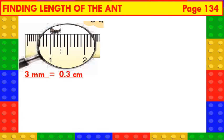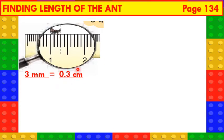Now, children, we will find the length of a small ant and then the length of a big ant. See here: 1, 2, 3. So, the length of this small ant is 3 millimetres. This 3 millimetres is also written as 0.3 centimetres. Or, we can also say that the length of this small ant is 3 tenths of a centimetre.